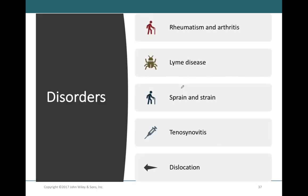The clinical conditions involving joints to be discussed are rheumatism and arthritis, Lyme's disease, tenosynovitis, and dislocation. Regarding sprains and strains: a sprain refers to the forcible twisting of a joint that stretches or tears its ligaments without causing dislocation, while a strain is a stretch or partially torn muscle or muscle tendon. These two conditions will not be on the exam.